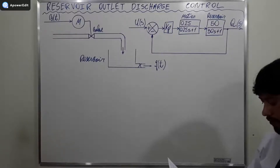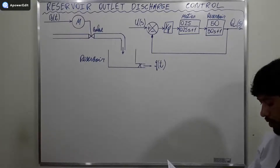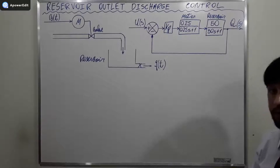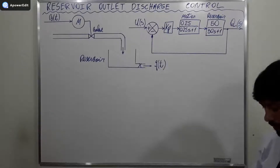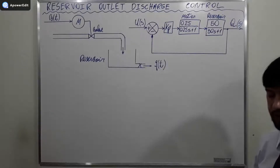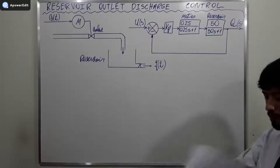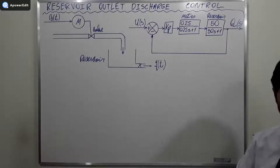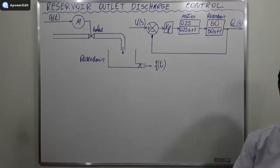The block diagram of the closed loop system model is shown on the board, where the gain Kp represents the proportional control responsible for promoting the variation of the supply voltage, and consequently the variation of the motor speed to drive the valve, in order to obtain a desired output flow rate. The value of the proportional gain Kp to be designed for the system to operate with a critically damped response is what we need to find. Let's solve the problem.